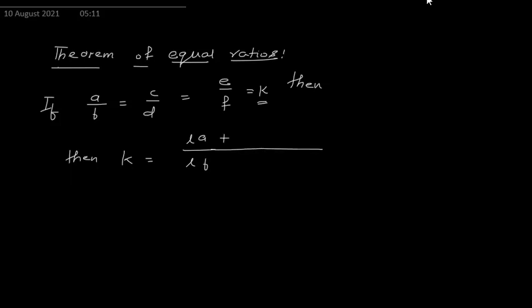So we can write plus or minus. We can write MC here, and this will be MD. And then we can put minus L, M, N — so NE. And if you have multiple ratios, if all the ratios are equal, this will be equal to common multiples — addition or subtraction — of the ratios.